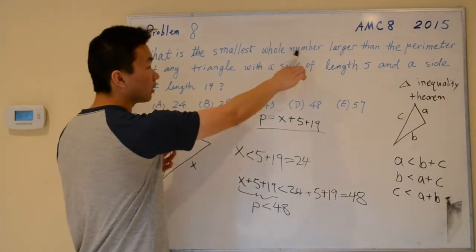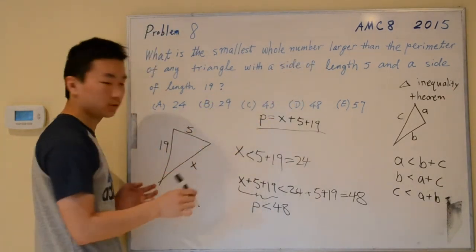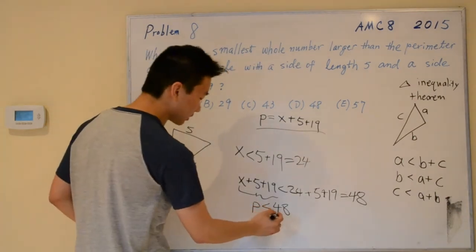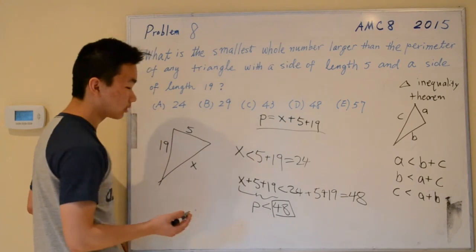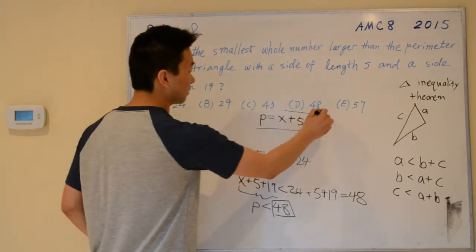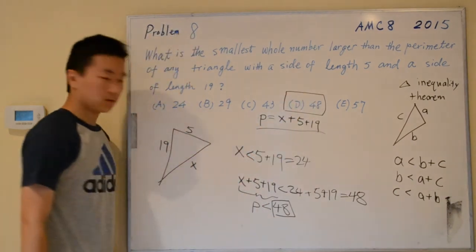We're searching for a number that's larger than the perimeter, and we're saying that 48 is larger than the perimeter, so our answer is 48. Thank you for watching.